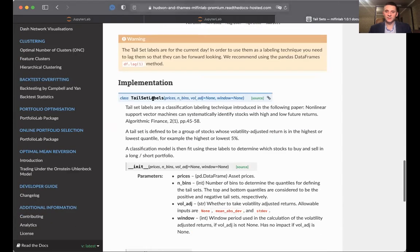So as you can see, tail sets labels is the class which uses prices as your input. So the prices is the dataframe of your asset prices, and bins, as we have discussed, is the number of bins to determine the quantiles for defining the tail sets. The top and bottom quantiles are considered to be the positive and negative tail sets respectively.